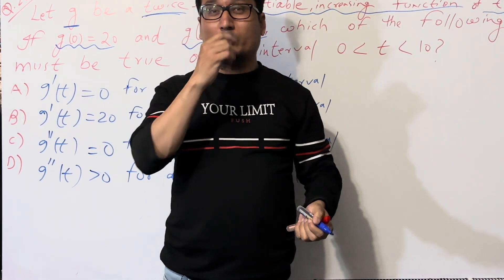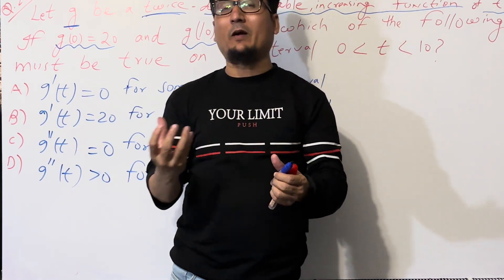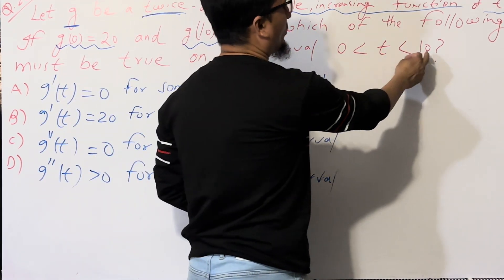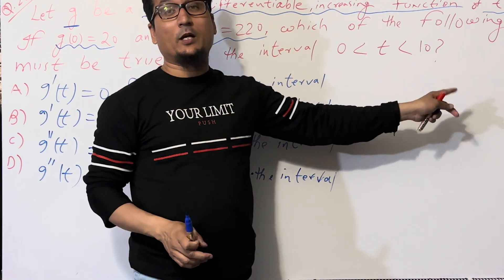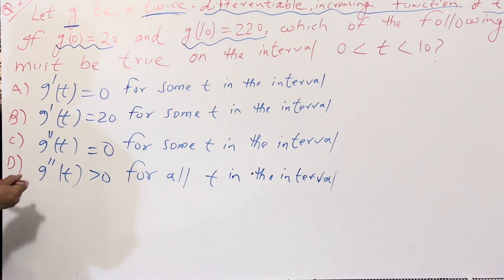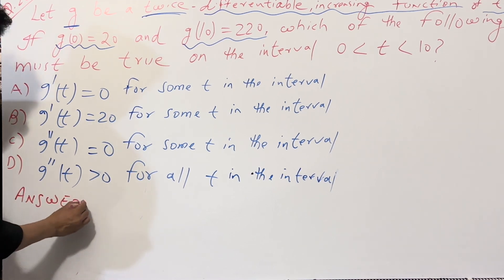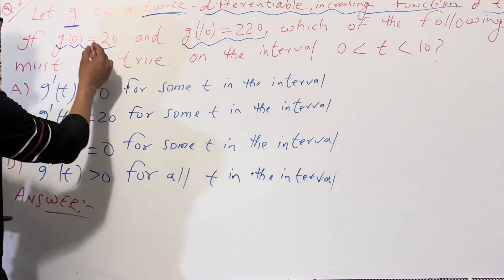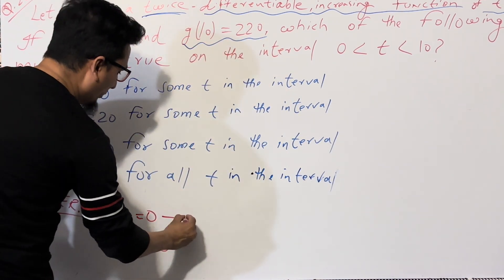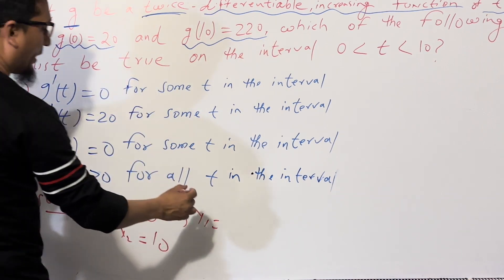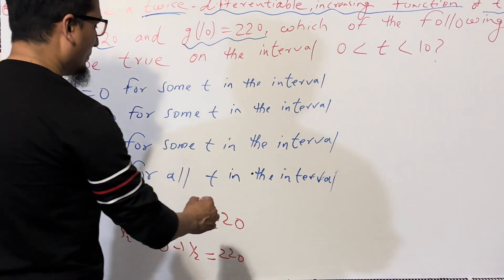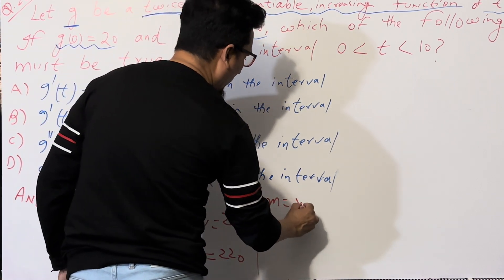The question asks which of the following must be true on the interval from 0 to 10. We are not taking all real numbers as the domain - we are focusing on the interval from 0 to 10, meaning values of T greater than 0 but less than 10. So x₁ equals 0, x₂ equals 10, and correspondingly y₁ equals 20 and y₂ equals 220.